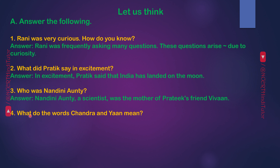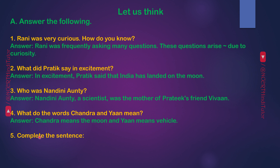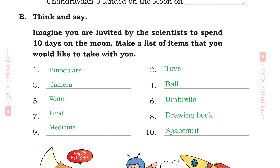Question 4: What do the words Chandra and Yaan mean? Answer: Chandra means the moon and Yaan means vehicle. Question 5: Complete the sentence. Chandrayaan 3 landed on the moon on 14th July 2023.